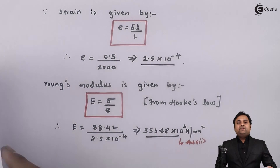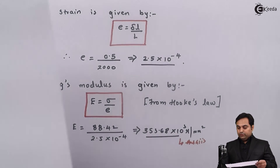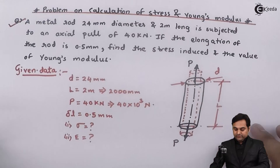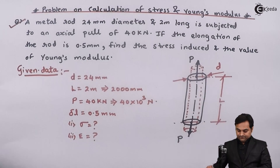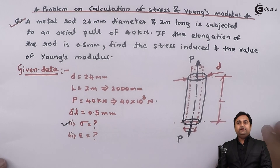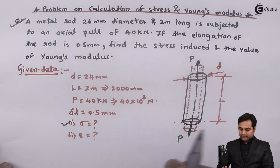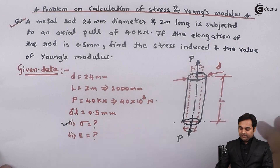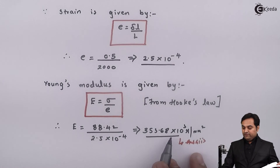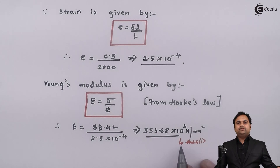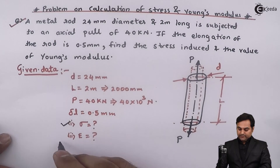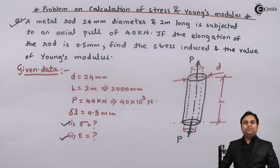In summary, there were two questions to solve. First, the stress sigma was calculated as 88.42 Newton per mm squared. Second, Young's modulus E was found to be 353.68 into 10 raised to 3 Newton per mm squared. With this, we complete the problem. Thank you.